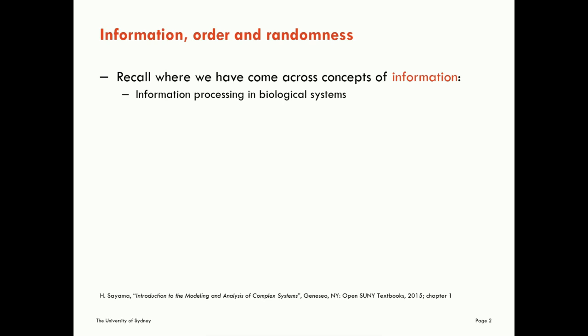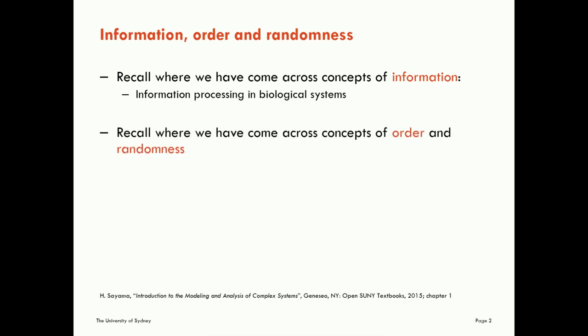In that earlier course we talked about information processing in biological systems — how birds in a flock compute their collective heading, how ants compute the most efficient route to food, and how collectives of neurons compute thought effectively. We also came across concepts of order and randomness, with information underpinning those. We talked about the edge of chaos — how many complex systems seem to sit at a phase transition between ordered and chaotic activity, and how there are many conjectures about systems near that point maximising information processing capabilities.